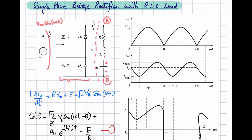The load is connected between points A and B. Since this is a full wave rectifier, a full wave rectified sine wave appears across the load terminals — this is the voltage waveform. Because there is an inductive load, the current lags behind the voltage. The minimum value of the current is at the start, increasing as voltage increases, then starting to decrease when the voltage waveform has a negative slope.